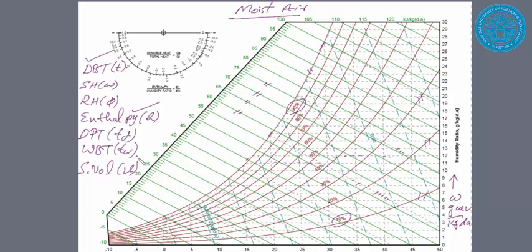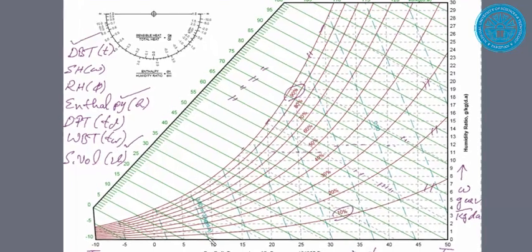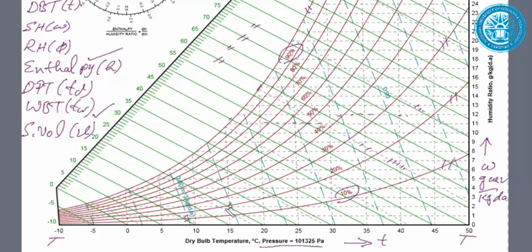And finally, specific volume lines. These bar lines show the specific volume of the moist air.